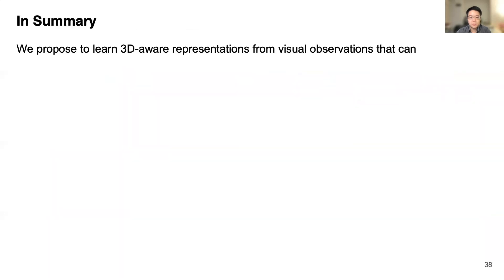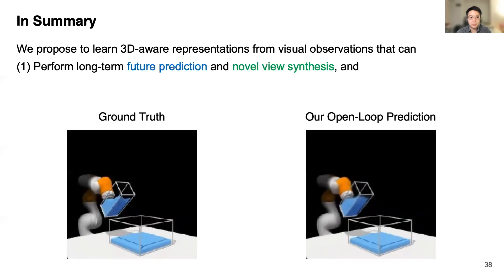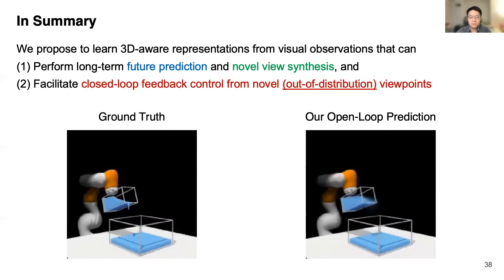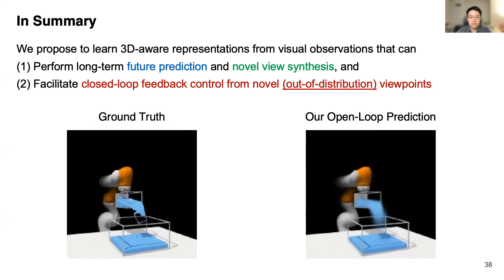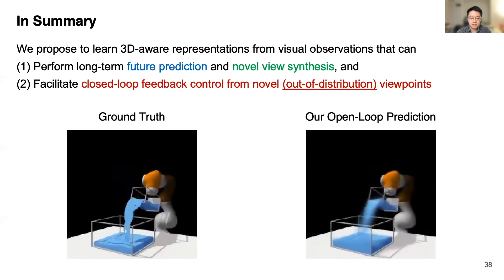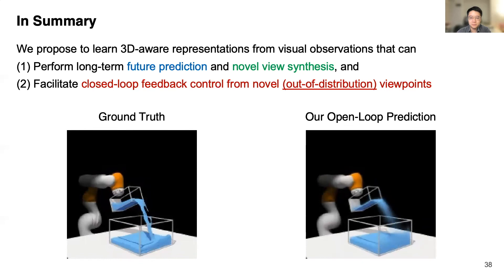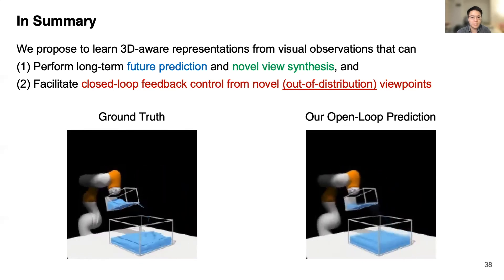In summary, we propose to learn 3D-aware representations from visual observations that can perform long-term future prediction and novel view synthesis, and facilitate closed-loop feedback control from novel viewpoints that are even outside the training distribution. We hope this work can inspire future studies of more generalizable visual motor control systems for complicated dynamic environments.